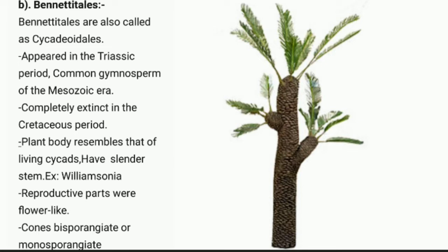The plant body resembles living cycads and has a slender stem. The example for Bennettitales is Williamsonia. Reproductive parts were flower-like; cones were bisporangiate or monosporangiate — two kinds of spores were present. On the screen you can see the image of Williamsonia.